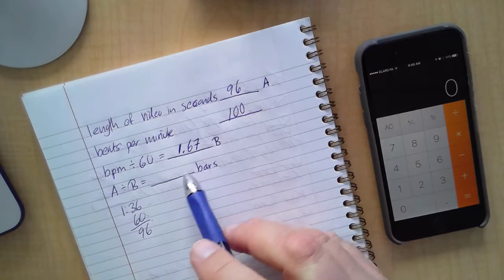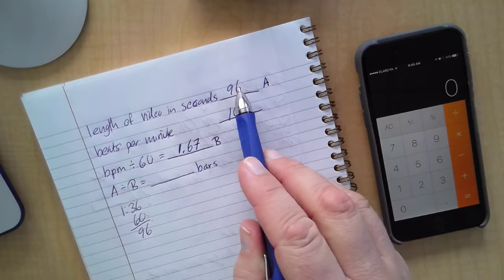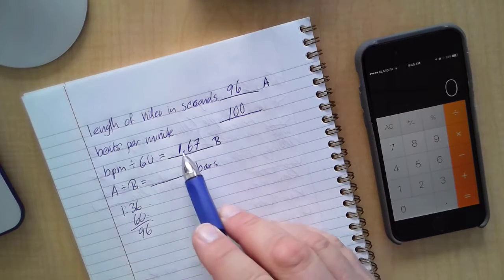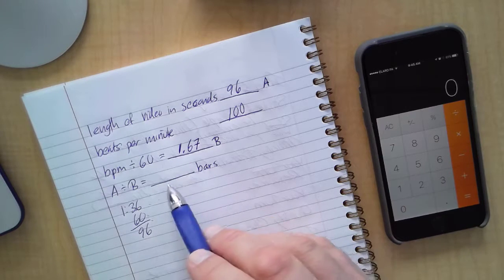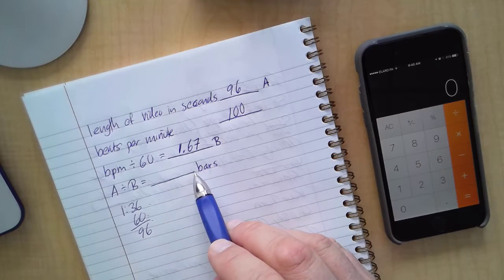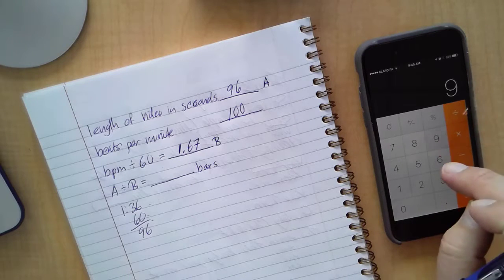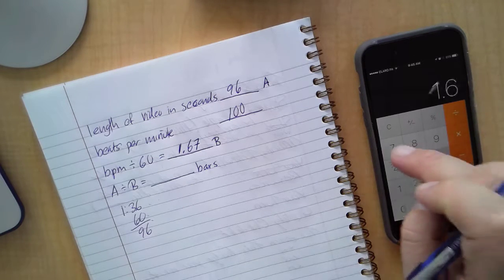And then it says, let me just clear this out, I need to take A, 96, and divide by B, 1.67. It's gonna tell me how many bars or measures, how long my song needs to be for GarageBand. So here we go, 96 divided by 1.67.